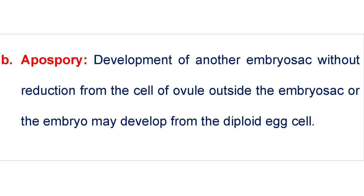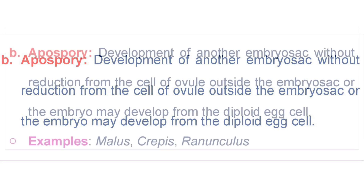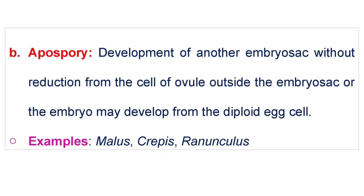In Apospory, development of another embryo sac occurs without reduction from the cell of the ovule outside the embryo sac, or the embryo may directly develop from the diploid egg cell. Apospory is seen in the crop plants of Malus, Crepis, and Ranunculus species.